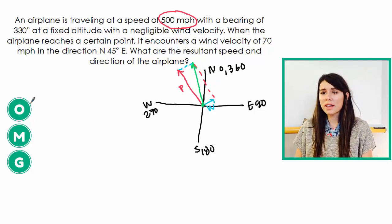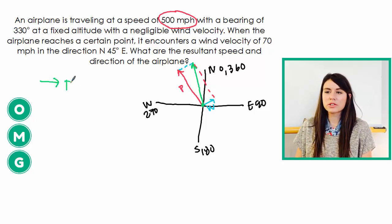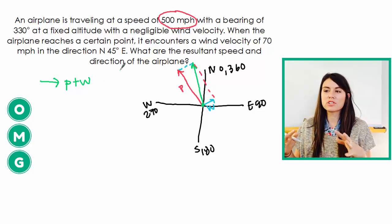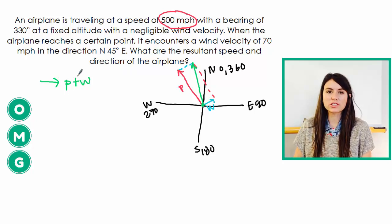So what that means, this green vector here, that represents the result of P and W being put together. And when we have two vectors that create a resultant vector, we add those two vectors together.